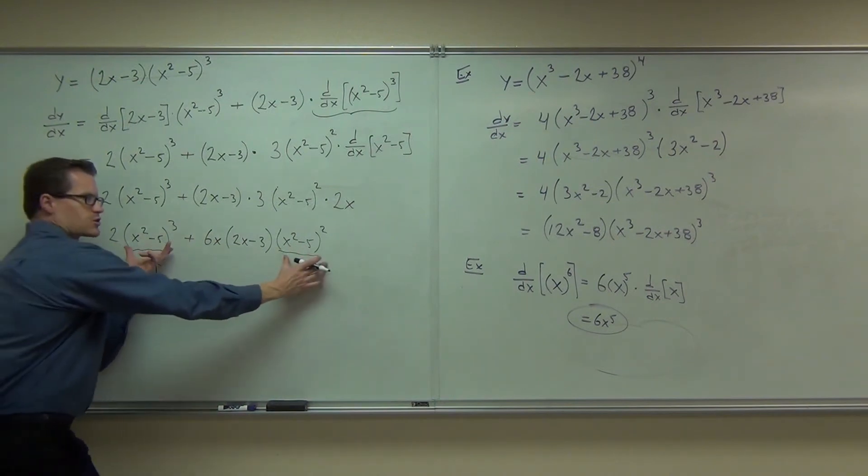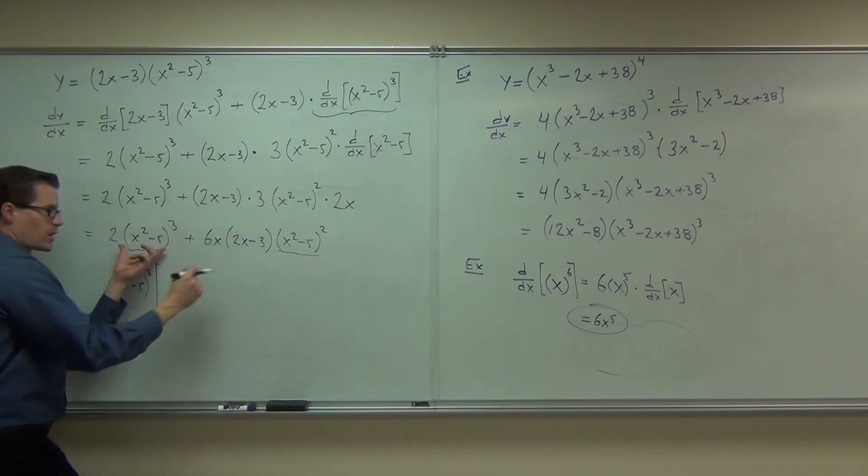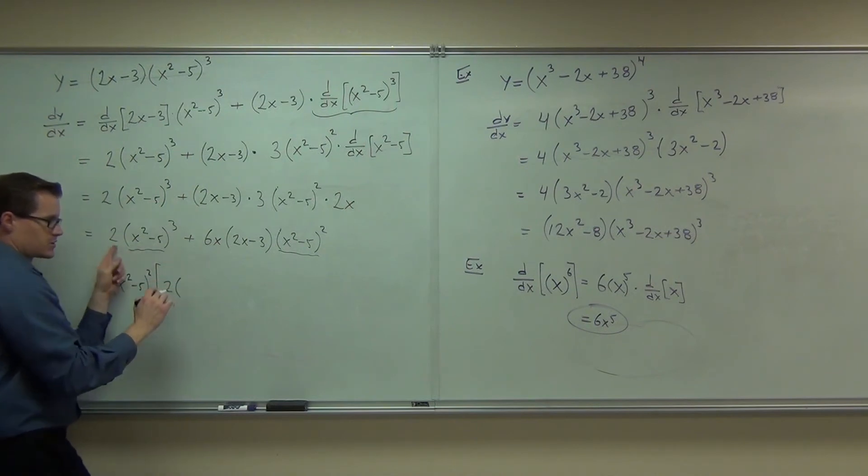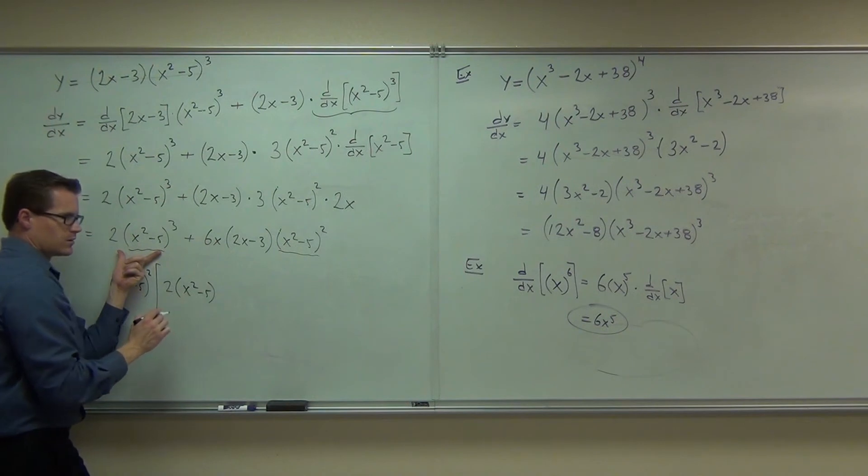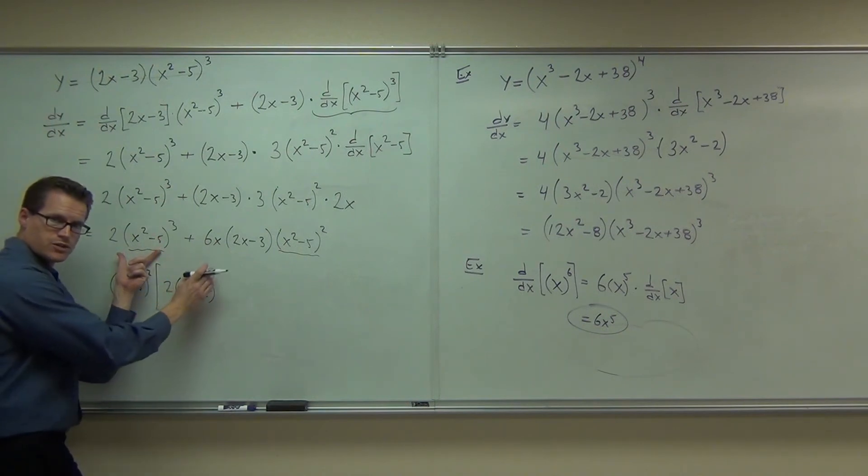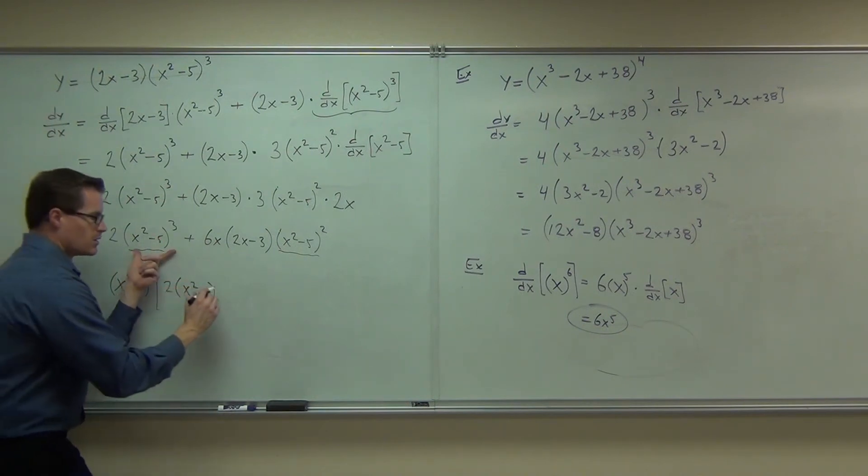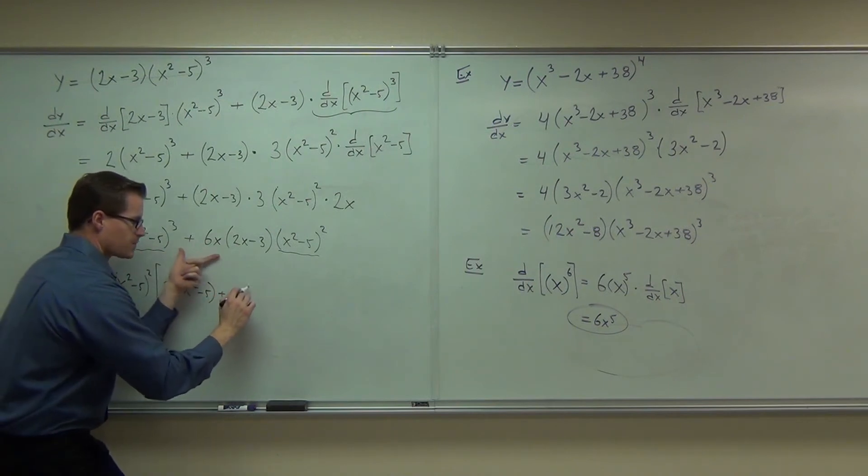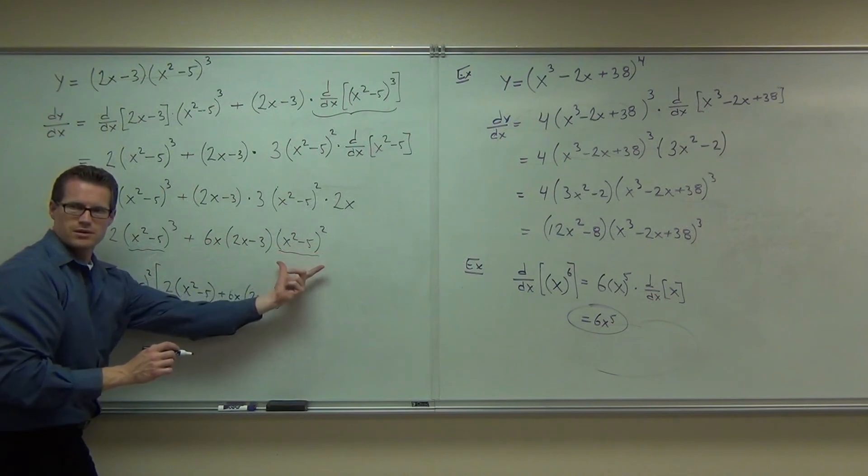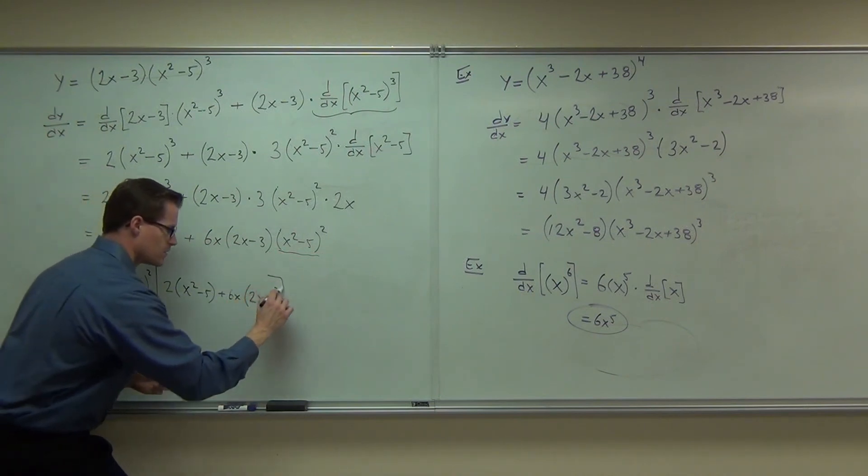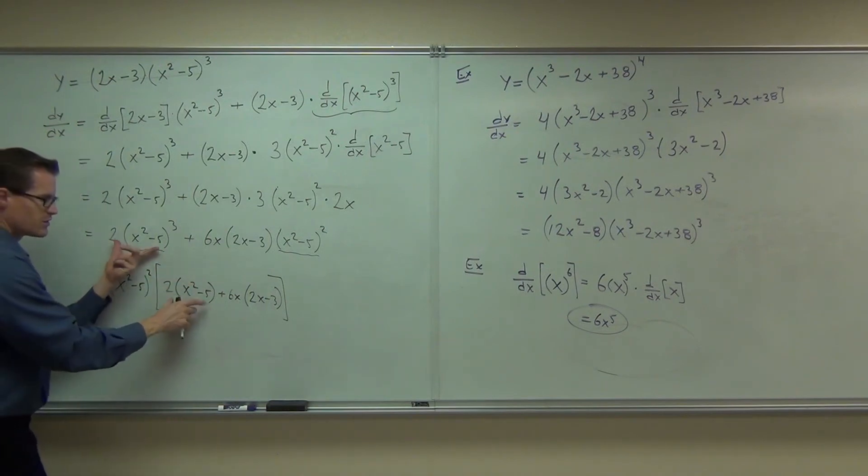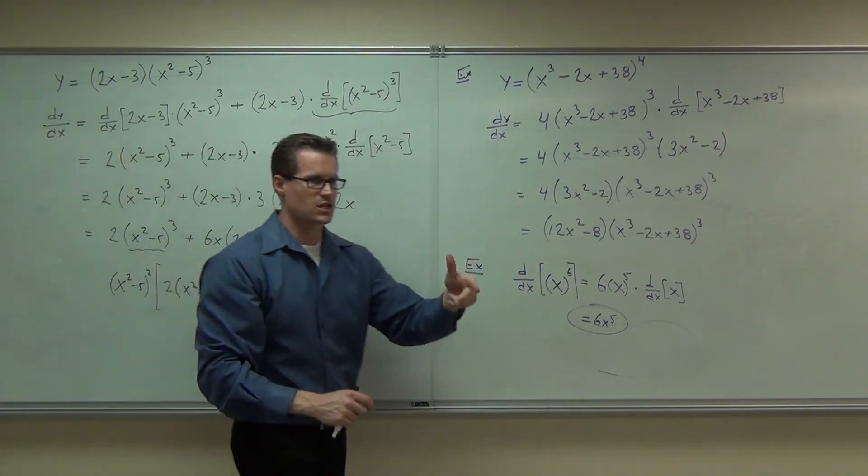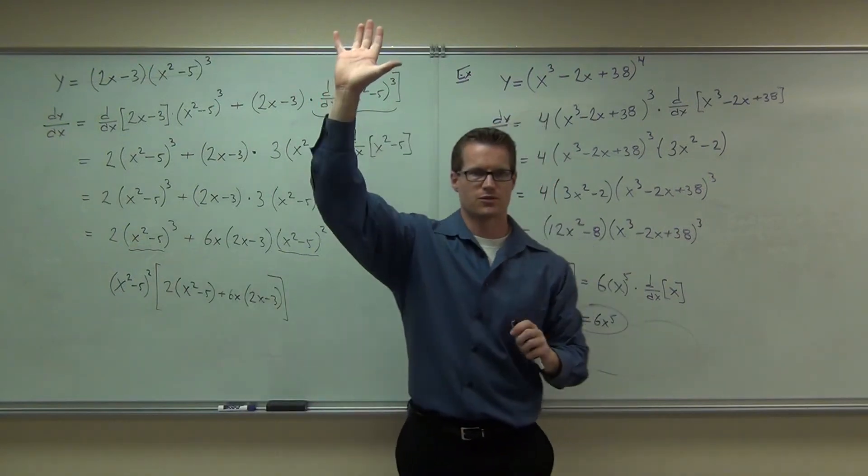If I pull out the x squared minus 5 squared, what I end with is 2. 2 still there. X squared minus 5 to what power? 1. Good, because I pulled out 2 of those things. Does that make sense to you? Plus 6x, 2x minus 3. Are there any of these left? I've factored that out. Notice you could get the same thing if you distributed. This distributes and give you this. This distributes and give you that. So that's factorization right there. The reason I feel all right about that so far.